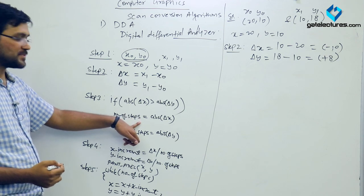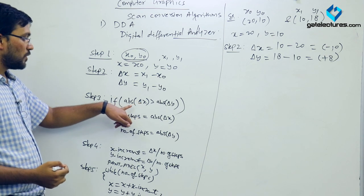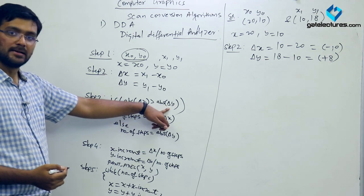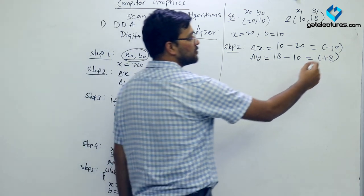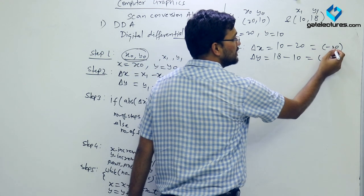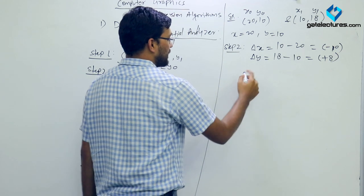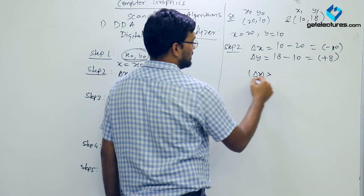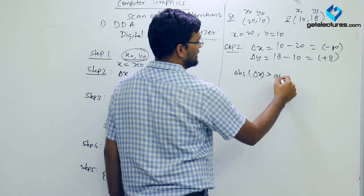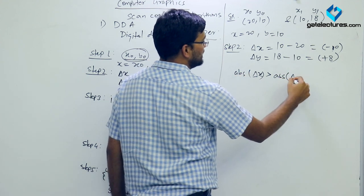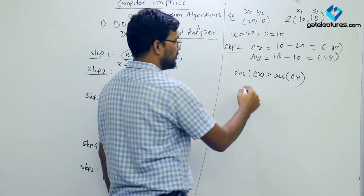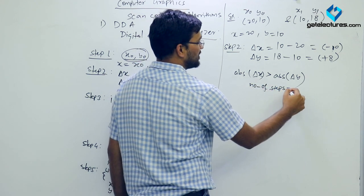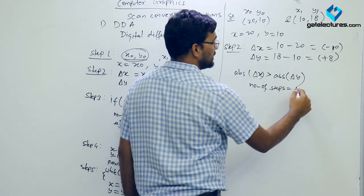Step 3 is to compute the number of steps based on the magnitude of DX and DY. Since the absolute value of DX (which is 10) is greater than the absolute value of DY (which is 8), my number of steps will be 10.